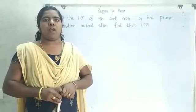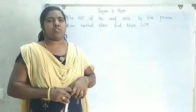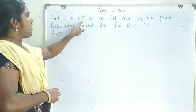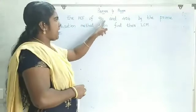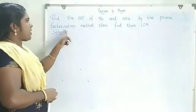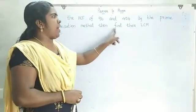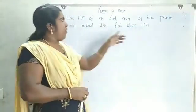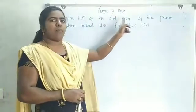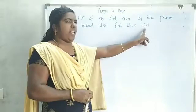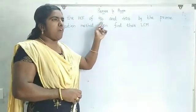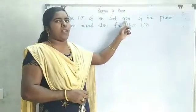Hi everyone, welcome to our MK Math Solving. Today we can solve one problem: Find the HCF of 96 and 404 by the prime factorization method, then find their LCM. We want to find the HCF of 96 and 404 and also find their LCM. First we find out the factors of 96 and 404.